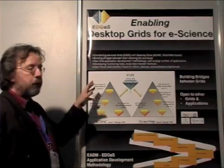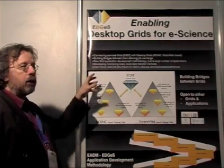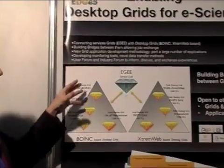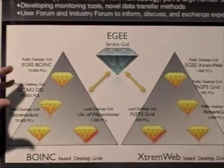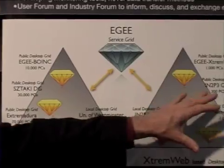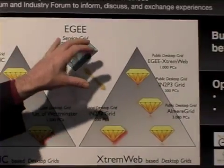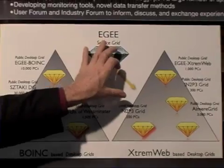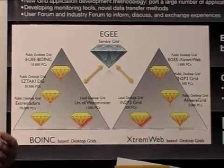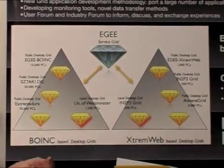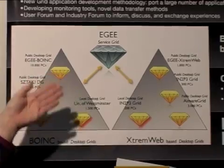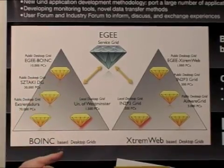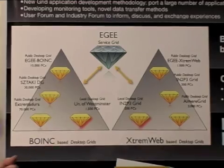The grid users can be the users from EGI, for instance. What we do is connect all desktop grids that we know of and that are in the project — like the Sataki desktop grid and the Almere grid — with EGI. Within the project we make bridges between those, and that means that an EGI user can submit jobs which are then executed by someone in Catania on their home computer.